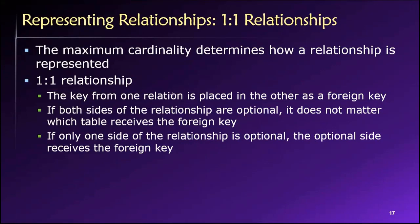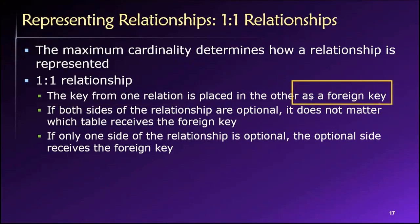When we have a one-to-one relationship, just like any other binary relationship, we keep track of connections between rows in two different tables using matched pairs of values in a primary key/foreign key relationship. We take the primary key from one relation and drop it into the other as a foreign key. However, now that we know about minimum cardinalities, there are additional things we need to consider.